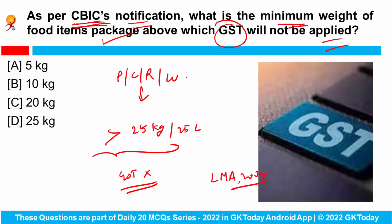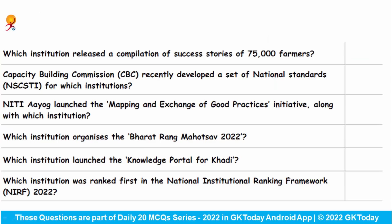Remember the criteria is 25 kg or 25 liters. Which institution released a compilation of the success stories of 75,000 farmers? The Indian Council of Agricultural Research released a compilation of the success stories of 75,000 farmers, commemorating Azadi ka Amrit Mahotsav.